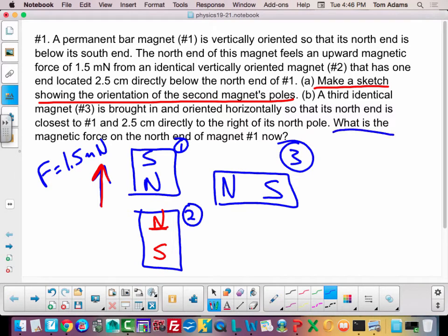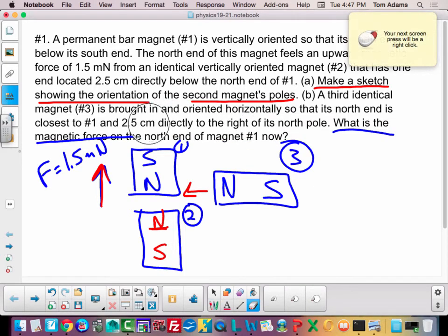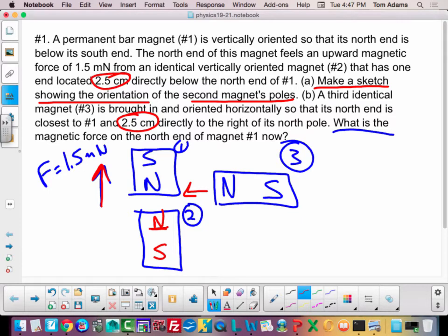And the question is, what is the magnetic force on the north end of the magnet one now? So I would guess that there's a force going this way. So if I were to draw a free body diagram, there's a couple clues. One is, they're equally distant apart, and they're also all identical magnets. So this is an identical magnet to this magnet, and also identical to this magnet. So they're all the same magnets.